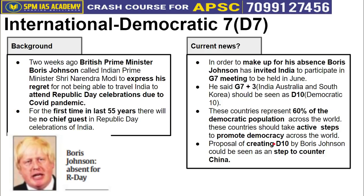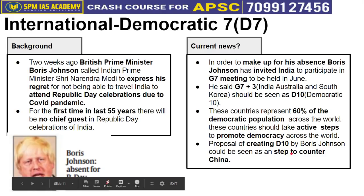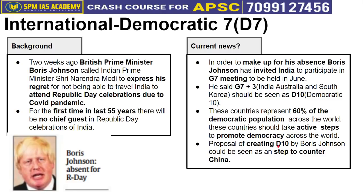The D10 proposal can be seen as a step to counter China, similar to how QUAD and Malabar exercises serve that purpose. China is not a democratic country — it has single-party rule by the Communist Party of China. Therefore, the D10 suggestion by Boris Johnson can be considered another step to counter China's influence.